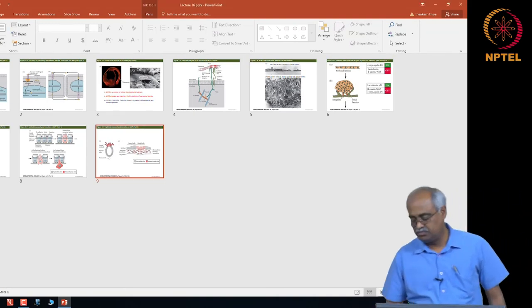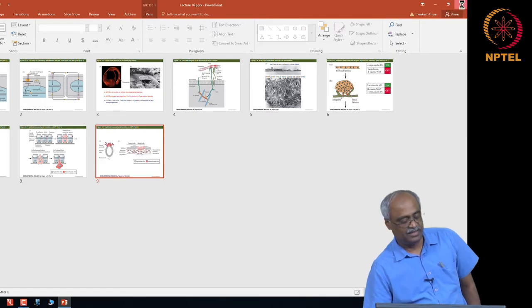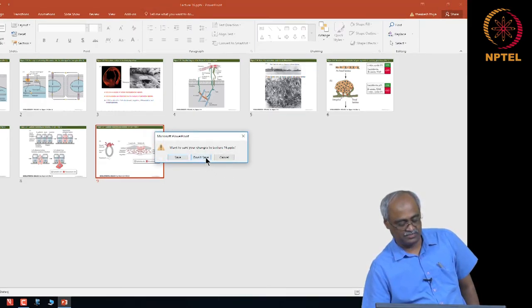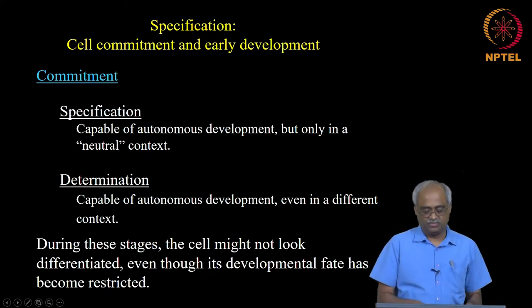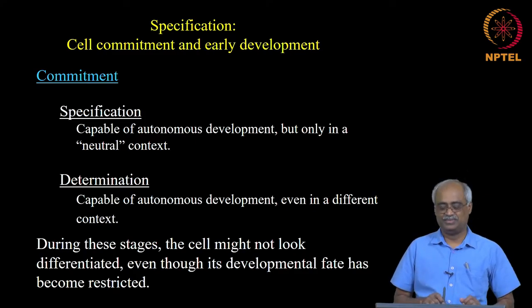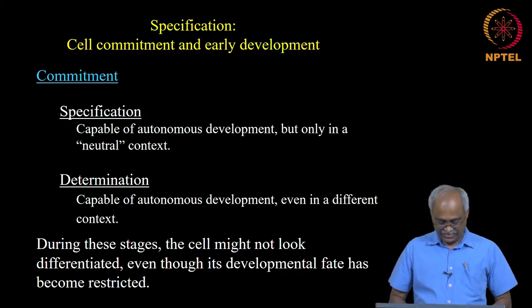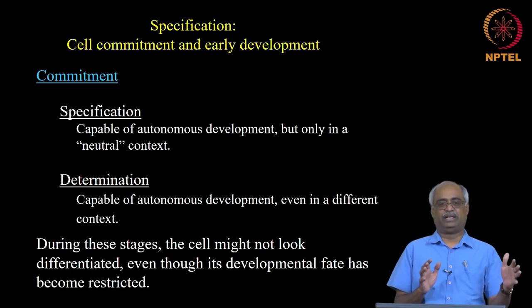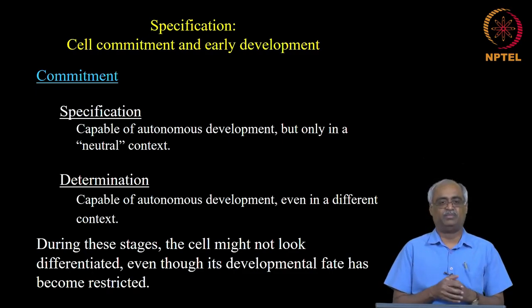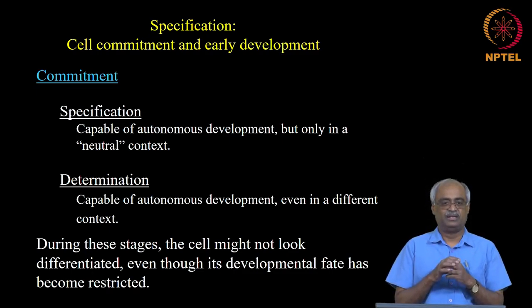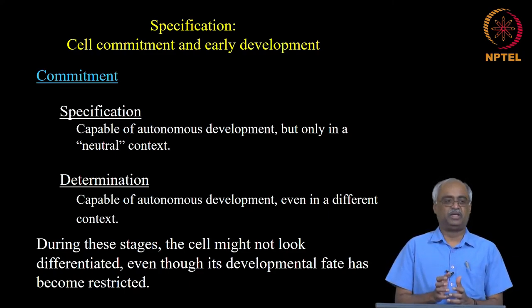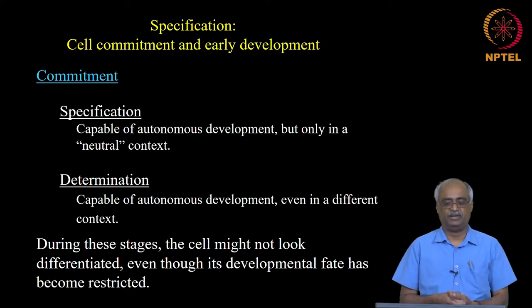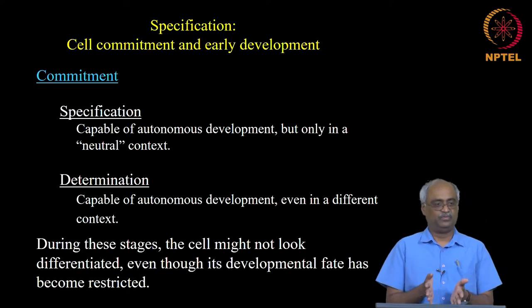Now we move to the next important concept in developmental biology: cell differentiation. We will look at some interesting history. We have been talking mostly about morphogenesis at the tissue level; before that, cells need to become different kinds of cells, and that process is called differentiation.